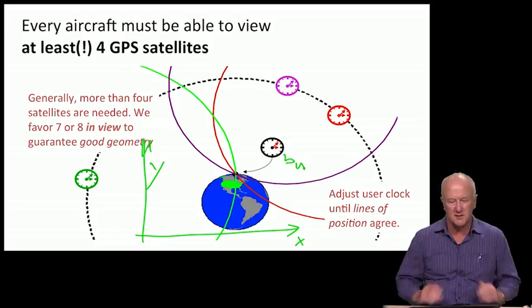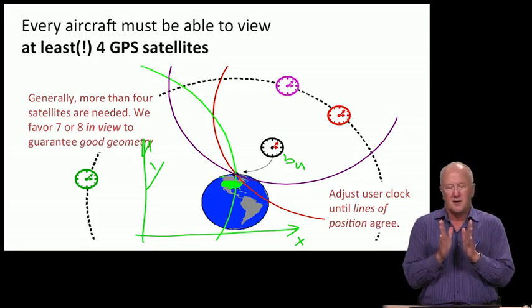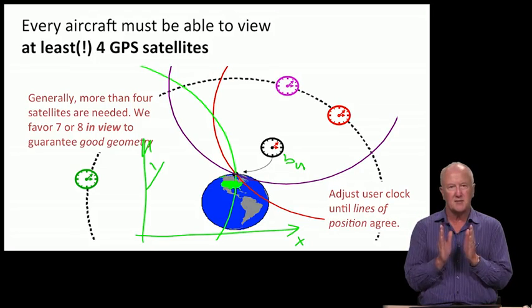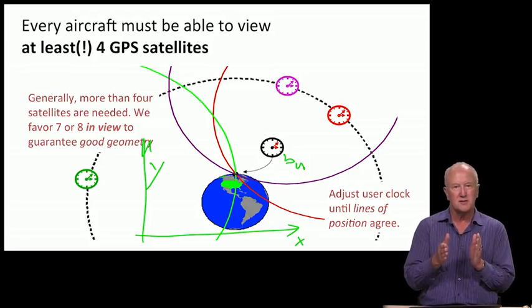GPS is more expensive than a true ranging system because you need that additional satellite to solve for time. But having done that, you get a bonus: not only do you know where you are, you know exactly what time is in the GPS frame.